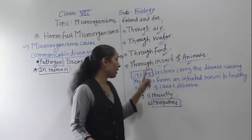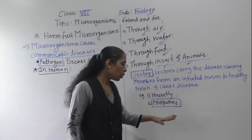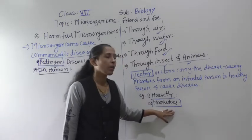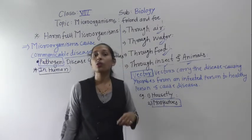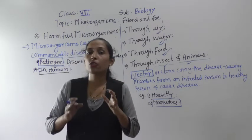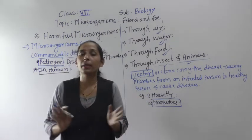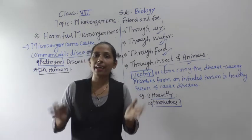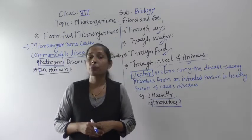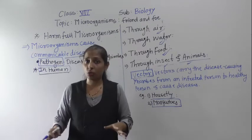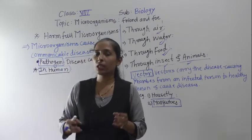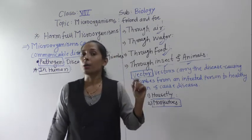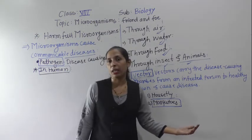These mosquitoes can also act as vectors. To stop the spread of communicable diseases caused by mosquitoes, we should destroy the breeding places of mosquitoes and not allow any stagnant water in our surroundings. If there is stagnant water, destroy it. Keep your surroundings clean and dry to stop mosquito breeding and the spread of communicable diseases.